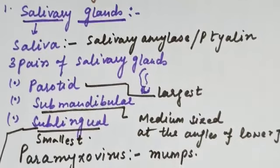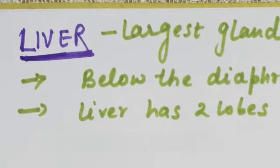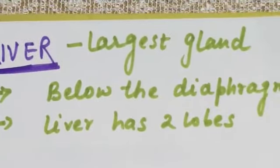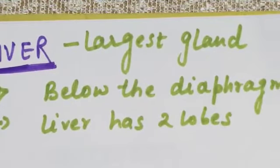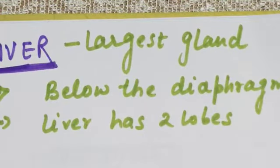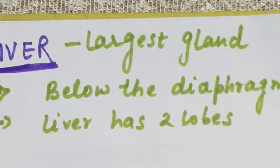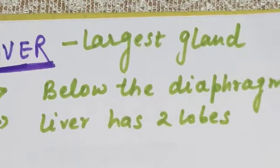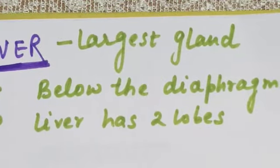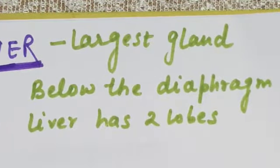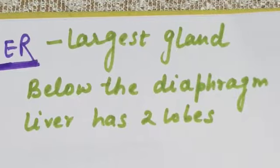Now we are moving to the next gland, which is the liver. Liver is the largest gland of the body and the second largest organ. The first largest organ is the skin. The liver is located just below the diaphragm.